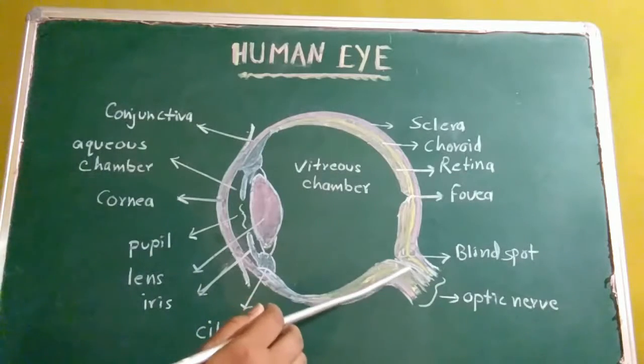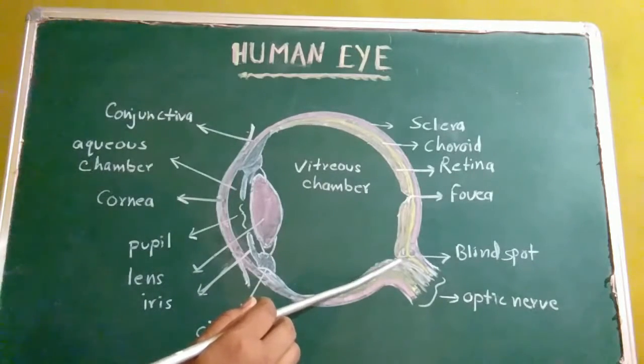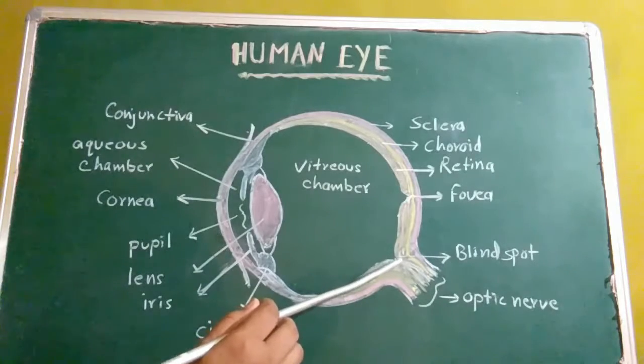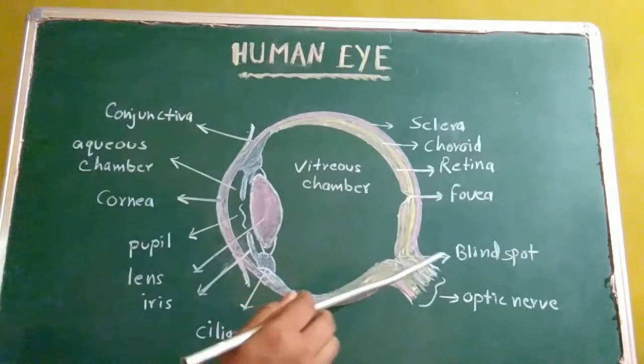Optic nerve comes out at this point and because no image is formed at this place, this point is called the blind spot.